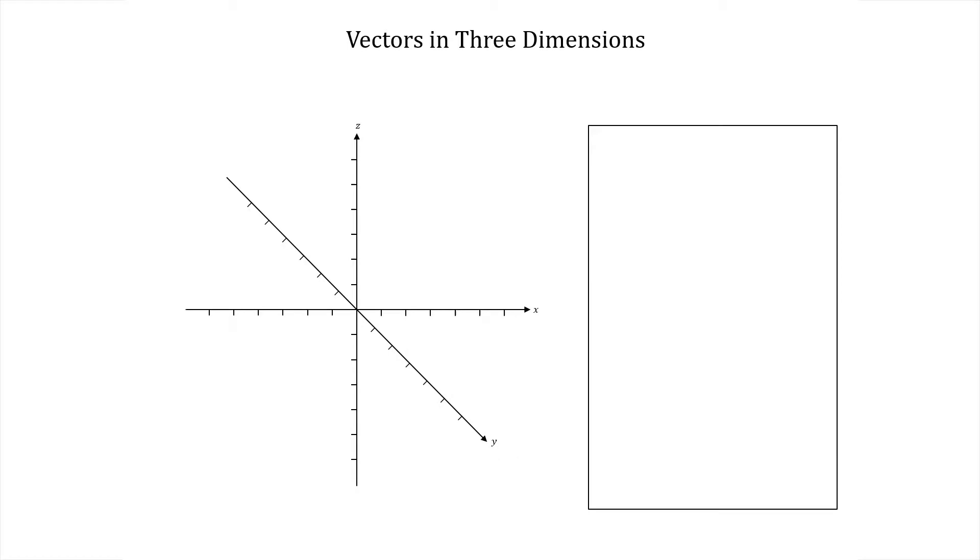So far in these videos we've only considered vectors as directed line segments in two dimensions. However, directed line segments in three dimensions are also vectors. We can describe them in a very similar way.